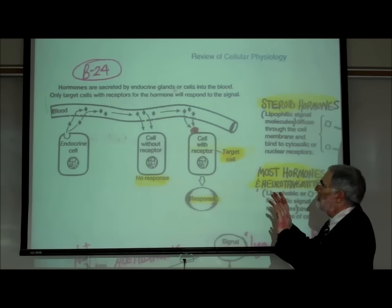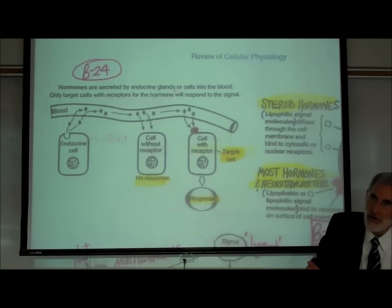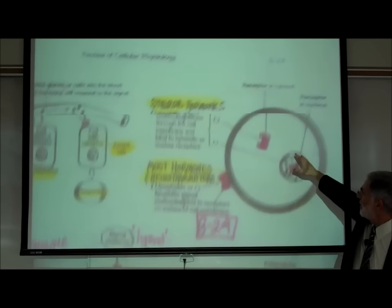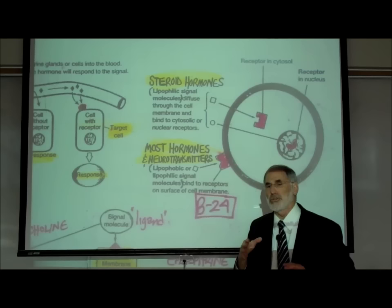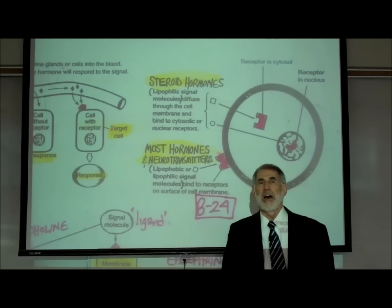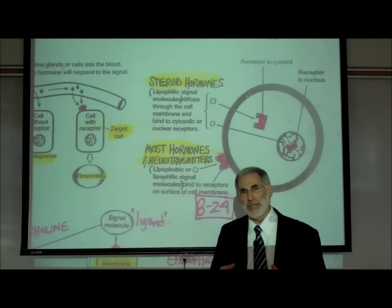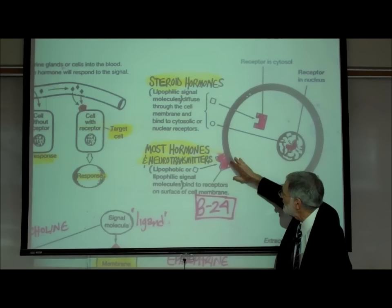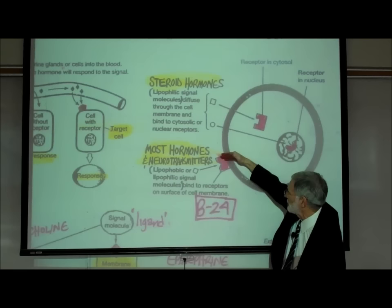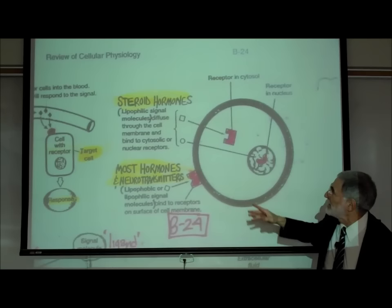The vast majority of receptor sites are located on the cell membrane surface. However, there are receptor sites sometimes within the cell itself. Most hormones and neurotransmitters cannot get across the cell membrane — either they are hydrophilic and cannot go through the fatty membrane, or they are simply too large. Insulin, for example, is a large protein far too large to cross the cell membrane, so it has receptor sites on the outer surface.